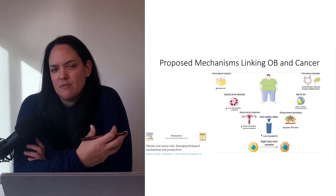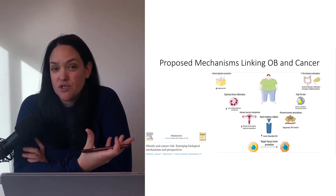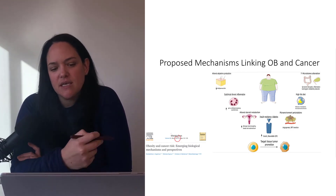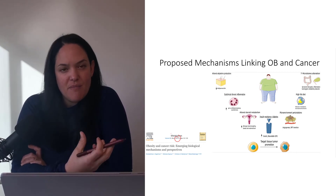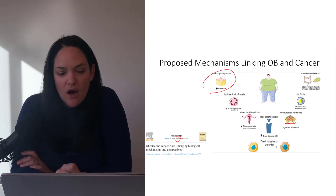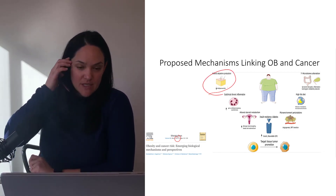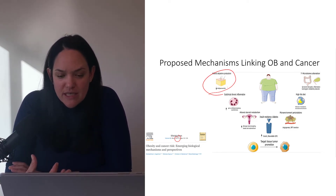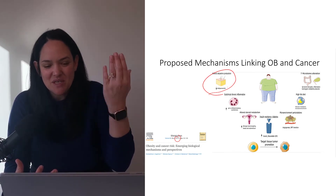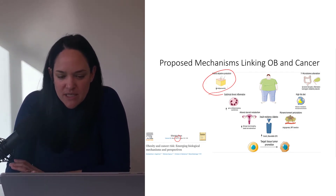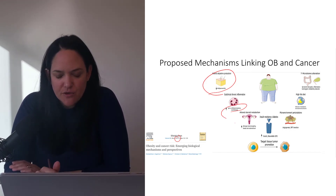What I just talked about are some of the proposed mechanisms when it comes to obesity and cancer. Here is a newer review article from 2019 which proposes some other mechanisms linking obesity and cancer. Like we talked about, altered adipokine production — particularly a decrease in adiponectin, which is typically associated with lower cancer risk — when adiponectin levels go down, that might increase risk. We've talked about those pro-inflammatory adipokines and cytokines, which are increased in obesity.